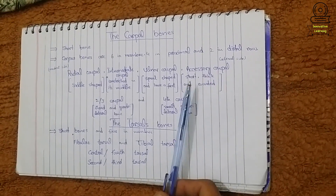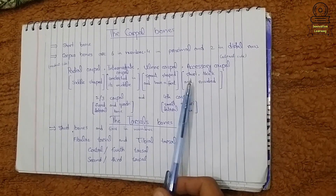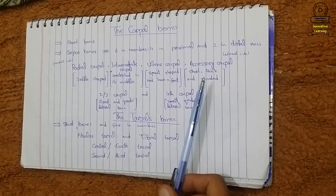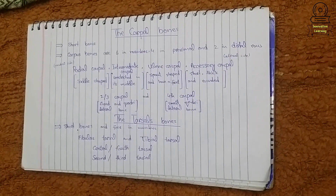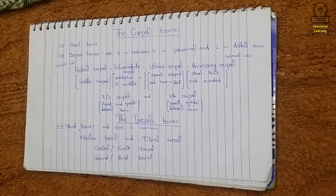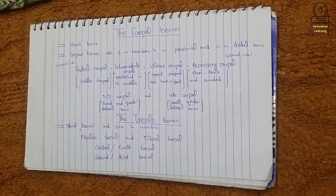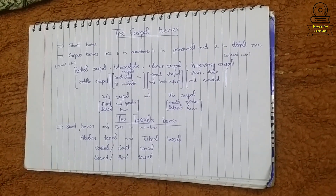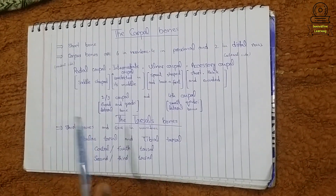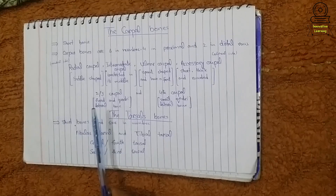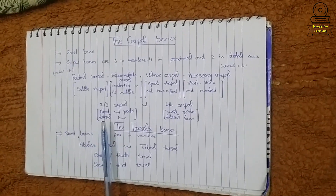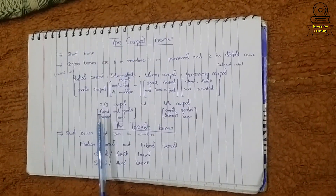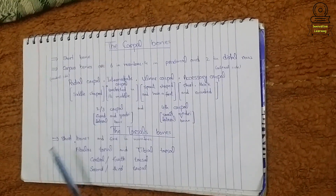The accessory carpal is short, thick, and rounded. We can easily identify the accessory carpal because of these features. The next carpal bone is the second and third carpal, which is actually a fusion of two carpal bones fused with each other.